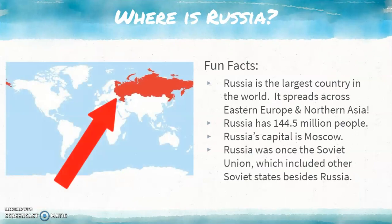To get the basics covered, we will first discuss what and where Russia is. Russia is the biggest country in the world, spreading across Europe and Northern Asia, also known as Eurasia. It has 144.5 million people, which most tend to cluster near the cities, but there is still plenty living in the widespread countryside. Russia was once the Soviet Union, which included other Soviet states besides Russia itself, and was also once a monarchy, meaning it was ruled by a royal family, as we saw in the previous video with Anastasia.